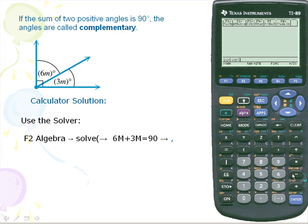Next we'll put in our function 6m. So notice that m is a purple function. So I'm going to hit alpha alpha and 5 for m plus 3m is equal to 90.